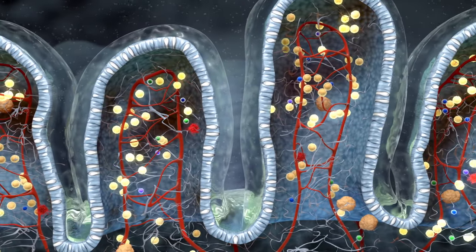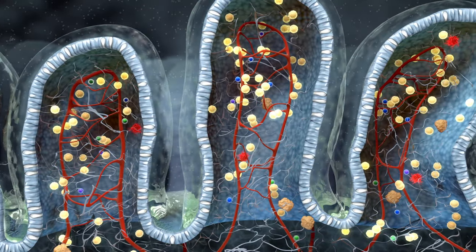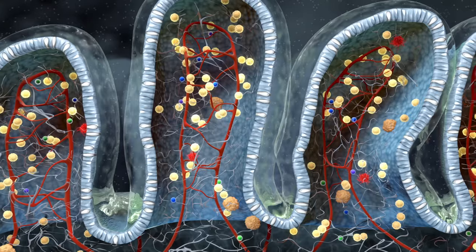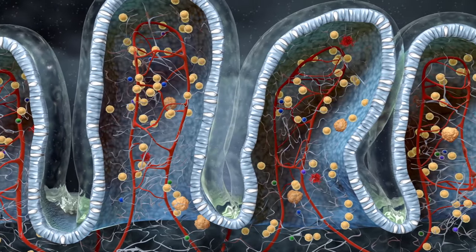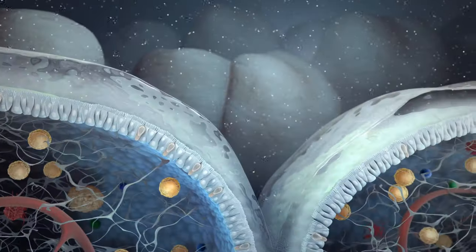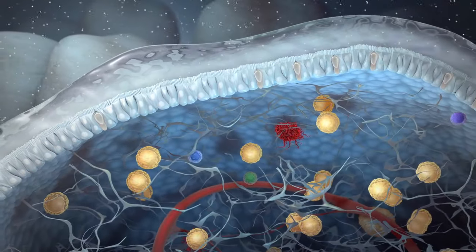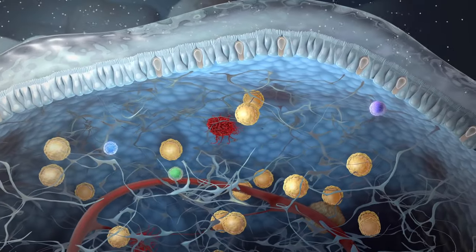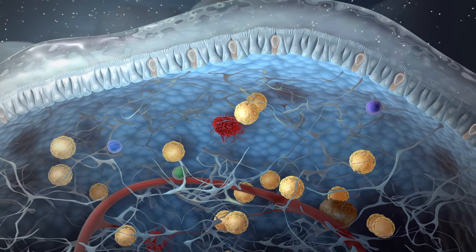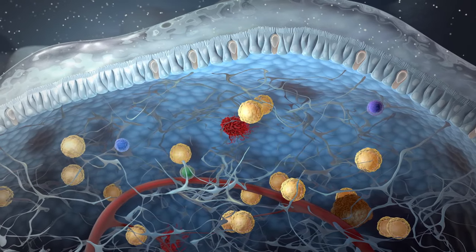In the gut mucosa, specialised immune cells actively reinforce the barrier and induce tolerance against food or commensal bacteria. Among these immune cells, a recently discovered type of lymphocyte called innate lymphoid cells, or ILCs, orchestrate immune responses and maintain tissue homeostasis.